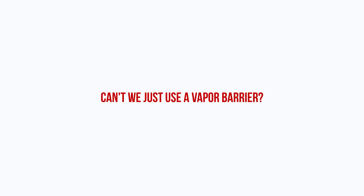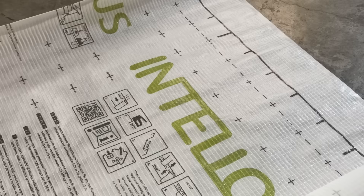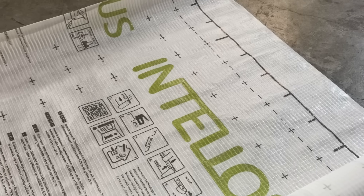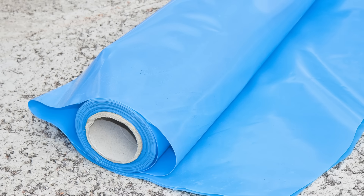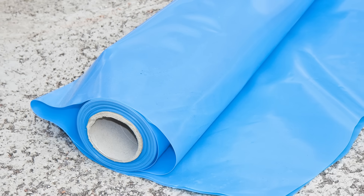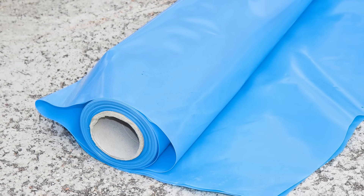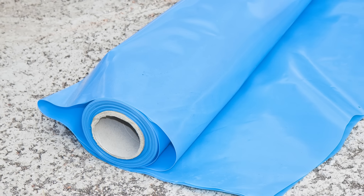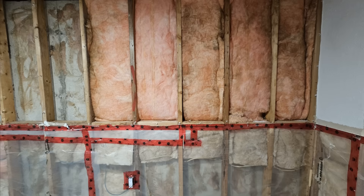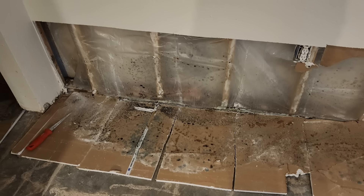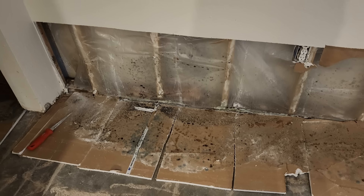Can't we just use a vapor barrier in this case? The answer is no, unless it's something like a smart vapor retarder. A polyethylene vapor barrier actually has a higher chance of trapping moisture in that wall, resulting in mold growth and deterioration of that framing.